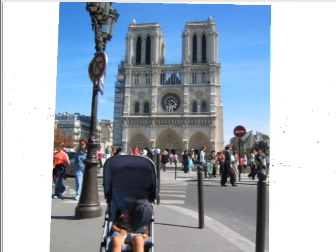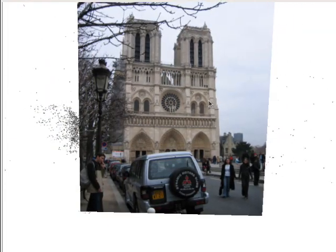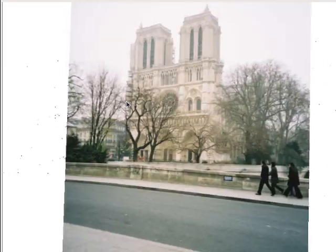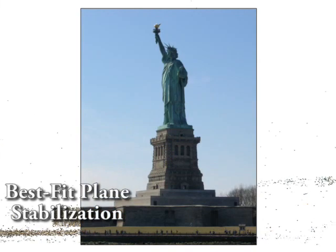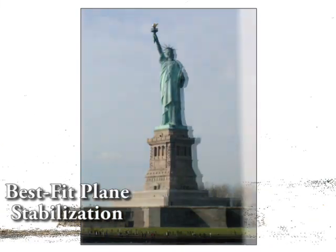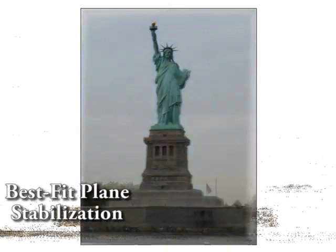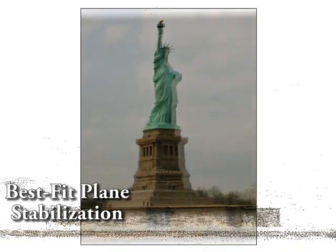We also support controls for orbiting around objects. To render the scene while the user moves, we project the selected photo onto a 3D proxy plane. This plane depends on the type of motion the user is undergoing. We normally use a plane fit to the 3D points seen by the current image. However, for orbital motions this can produce a jerky effect, as different planes can be selected for different images, stabilizing different parts of the scene.